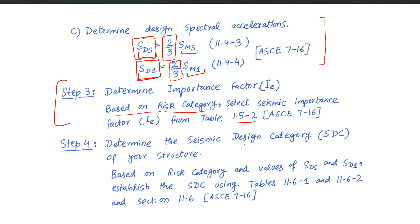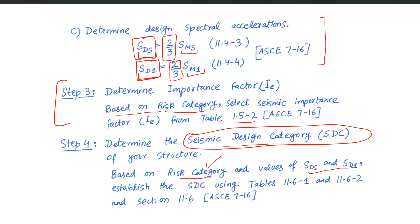Step 4 is the Determination of Seismic Design Category (SDC) of our structure. Risk category was based on the occupancy of our structure. SDS and SD1 were based on the site class and the hazard level of our site. Now we will combine these two pieces of information to get a new parameter called the Seismic Design Category. This parameter will combine the risk associated with the structure as represented by the risk category, and the effect of site class and the hazard level SS and S1.